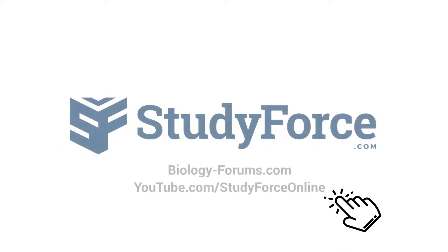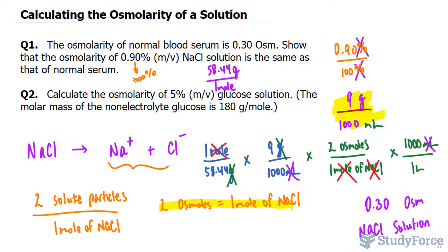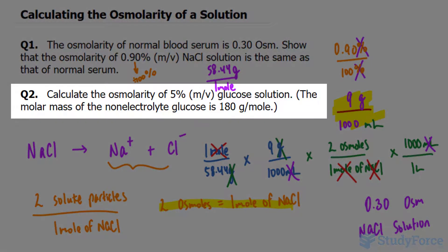Welcome back to question 2 of our series where we learn how to calculate the osmolarity of a solution. The reason we're posting this video is because of a request made by one of our viewers. The question reads: calculate the osmolarity of 5% mass per volume glucose solution. We're told that the molar mass of the non-electrolyte glucose is 180 grams per mole.